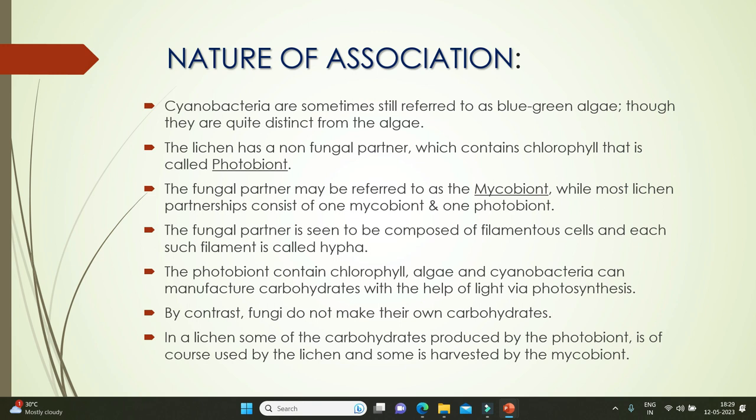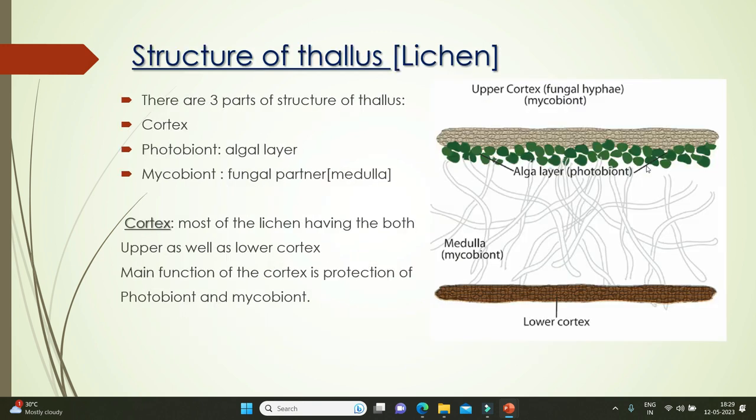Algae and cyanobacteria can manufacture carbohydrates with the help of light via photosynthesis. By contrast, fungi do not make their own carbohydrates. In a lichen, some of the carbohydrates produced by the photobiont are used by the lichen itself, and some are harvested by the mycobiont, the fungal partner.